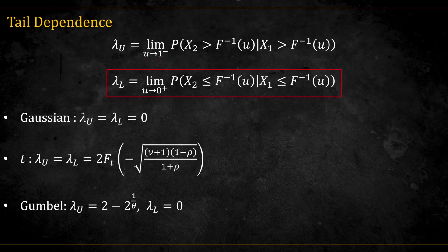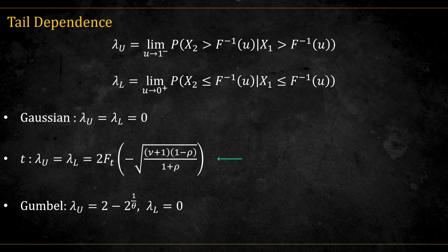The lower tail dependence does the same, but for the lower end. It's the probability that one variable falls below a low quantile when the other does, as U goes to 0. For example, the Gaussian copula has zero tail dependence, while the T copula has non-zero tail dependence, given by this expression, where f is the CDF of the standard T distribution.